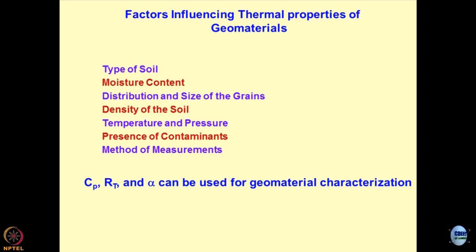Imagine a situation where pores are filled with air only and you heat the system. In a second situation, there could be partially saturated soils with some air and some moisture. In the third situation, pores are fully filled with water — saturated soils. Heat conduction is going to be much faster in the saturated state compared to the dry state. Then comes distribution and size of grains, which affects density. Uniformly distributed soils create a dense matrix — if particle-to-particle contact is better, heat conduction will be good. More density means less resistivity.